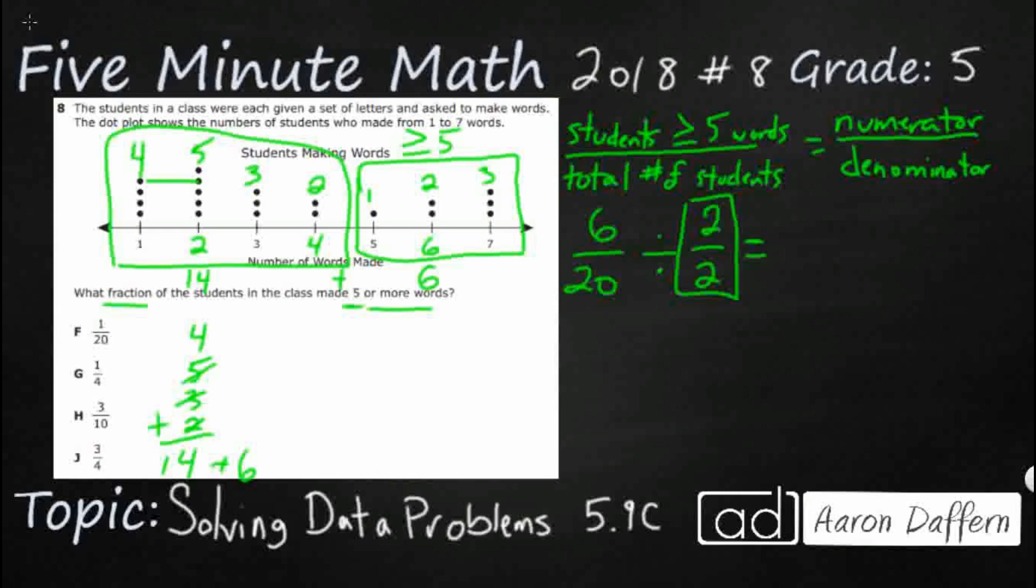6 divided by 2, that's going to get you 3. 20 divided by 2, that gets you 10. 3 is prime, 3 does not go into 10, which means you're done. And we have our answer. It is H, 3 tenths.